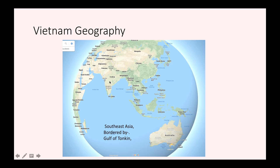Vietnam borders three countries. It's bordered by China to the north, Laos to the west and Cambodia to the west. It also has a large coastline on the ocean. This part of the coastline is called the Gulf of Tonkin or the Tonkin Gulf, and the other part of the coastline down here is called the South China Sea.